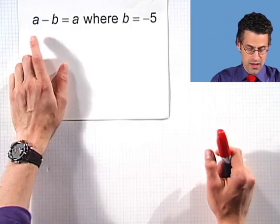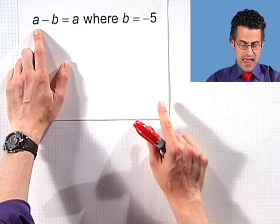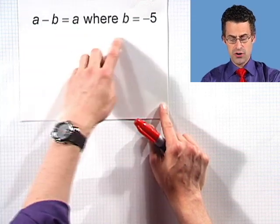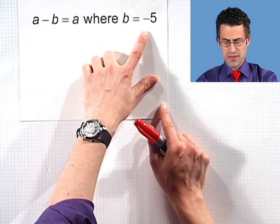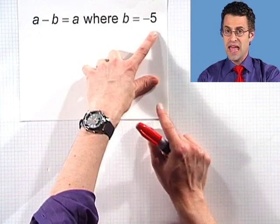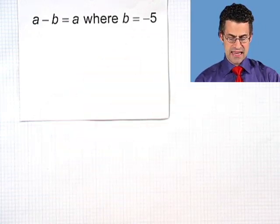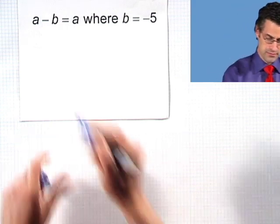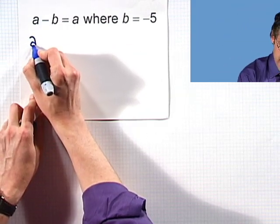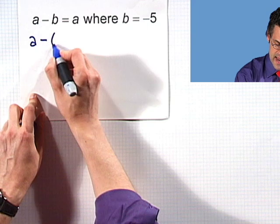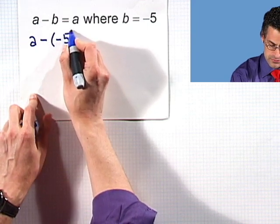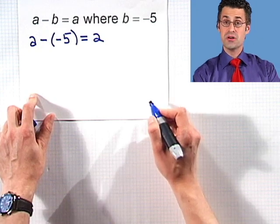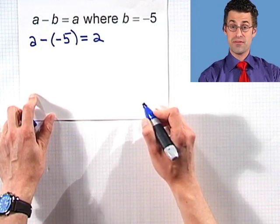Let's take a look at an example. I have A minus B equals A, and I'm told that B is going to take on the value negative 5. So I have A minus negative 5 equaling A. Is that always true, sometimes true, or never true?